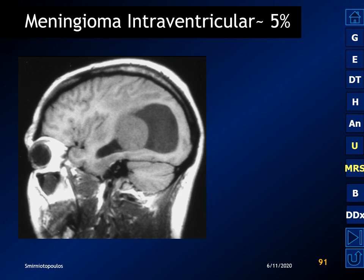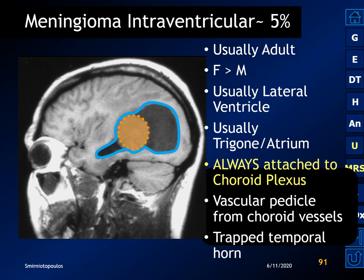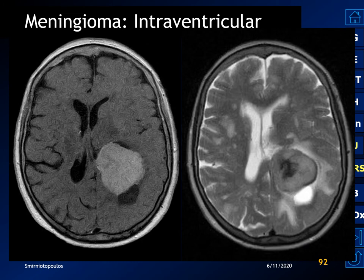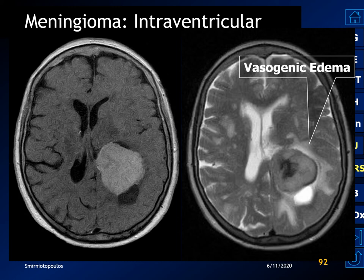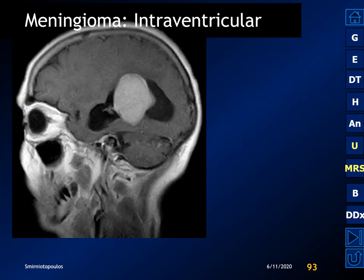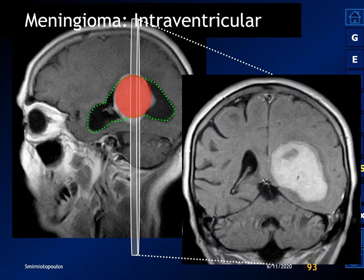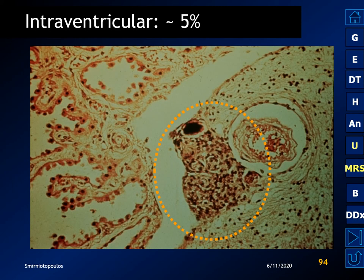Approximately 5% of meningiomas arise within the ventricle. This is most commonly seen in adult patients, again with the female predilection. The most common location is the trigone of the lateral ventricle. They are always attached to the choroid plexus, derive their vascular pedicle from the choroidal blood vessels, and can cause a trapped temporal horn. Intraventricular meningiomas arise because nests of meningothelial cells can be embedded within the normal choroid plexus — embryologically, the choroid plexus forms from an invagination of vessels and pia-arachnoid into the choroidal fissure.